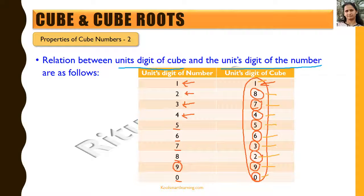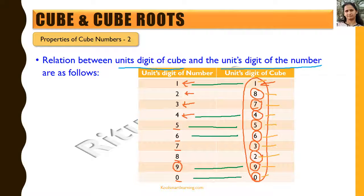A second pattern: for units digits 1, 4, 5, 6, 9, and 0 — six digits in total — the units digit of the cube is the same as the units digit of the number itself. For all other digits (2, 3, 7, 8), there is one and only one corresponding units digit in the cube. We need to know all of these mappings.